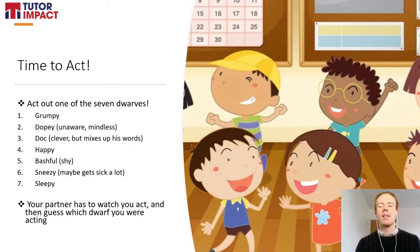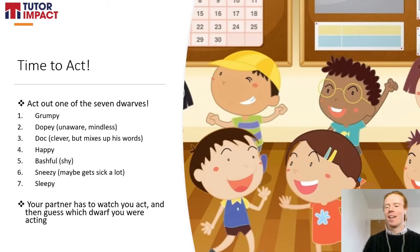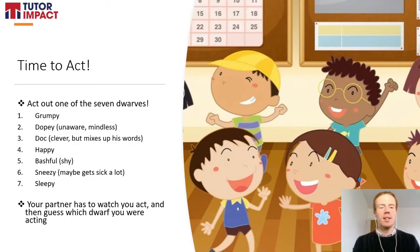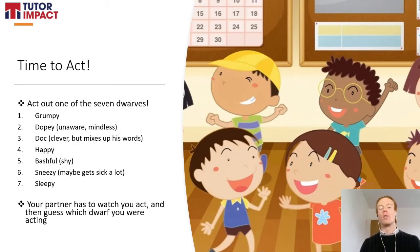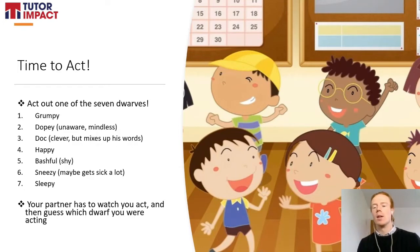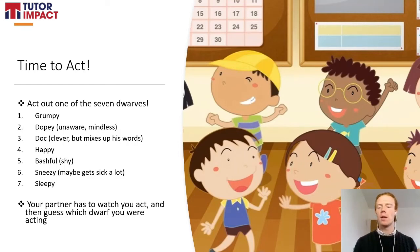Once you've gone through all seven dwarves using words, you can then act with just actions and see if your partner can guess the dwarf based on just your movements, trying to capture the predominant characteristic. For example, if I was acting the dwarf Happy, I could stroll around all jolly with a big smile on my face. You can pause the video and have a go at this activity, making it progressively harder — use words at first, then just actions, then shorten the acting window to only three seconds.